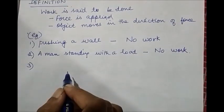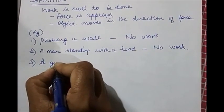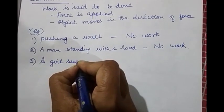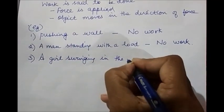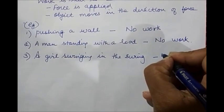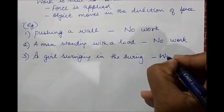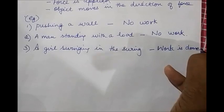Third example. Let us consider a girl swinging in a swing. In this case, we say work is done because there is some movement in the direction of force. So this is how we identify whether work is done or not.